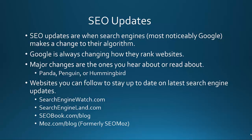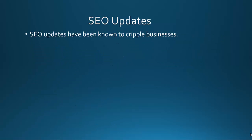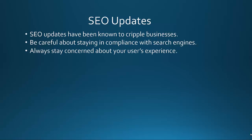With these updates, really look at how they impact strategies you've done in the past. For example, Penguin and Panda were big about backlinks, so you'd want to go in and disavow those links in Webmaster Tools — meaning get rid of links from low-quality sources that Google may flag. You may find that Google actually tells you what links they want to see removed. SEO updates have been known to cripple businesses, so stay in compliance with the search engines.